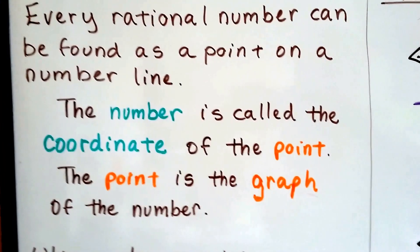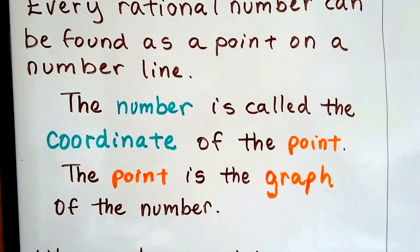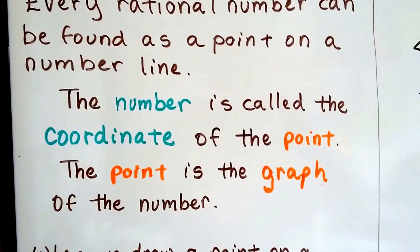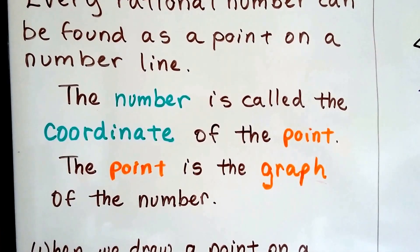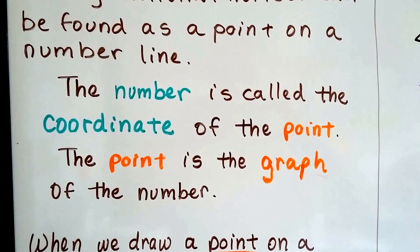Every rational number can be found as a point on a number line. A number is called the coordinate of the point, and the point is the graph of the number.